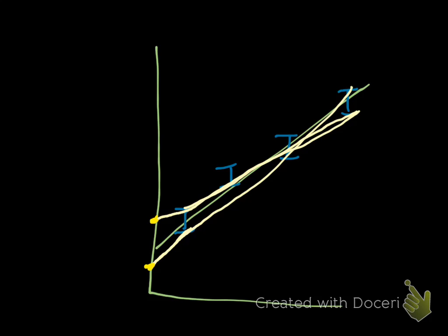So here we have a straight line graph again. Max and min slopes are already drawn. And this time we have to find the uncertainty for the intercepts.